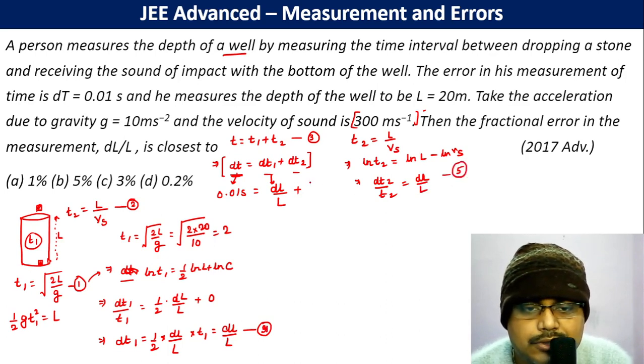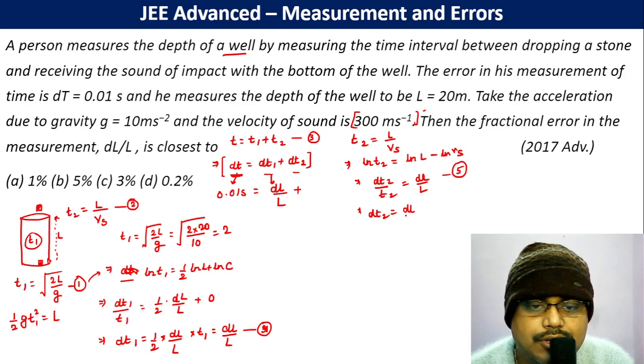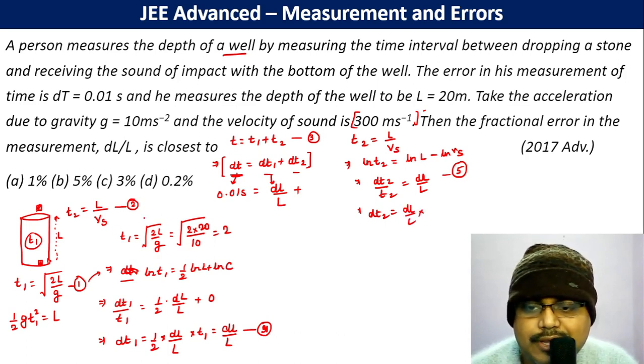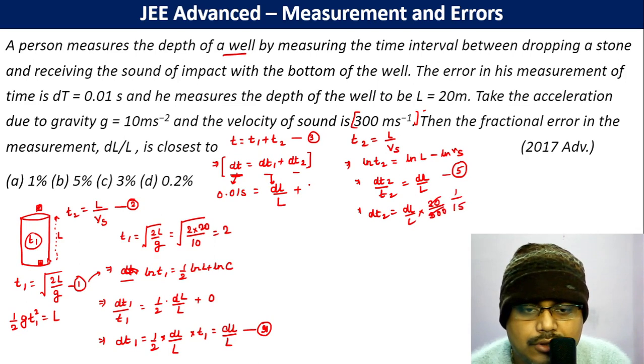So plus dt2. dt2 becomes (dL/L)t2. So (dL/L)t2, where t2 is L/vs. L is 20, vs is 300, so this is 1/15. So plus (dL/L) times 1/15.